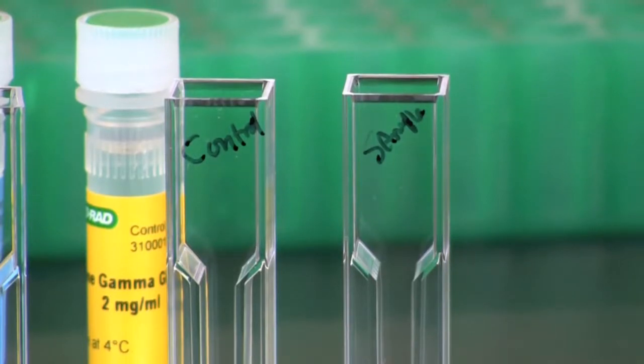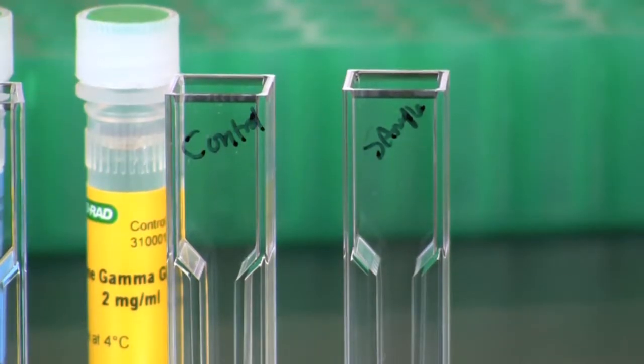Label 2 cuvettes, one control and the other sample. Do not handle the cuvette where the light passes through and make certain your labels are well above this area.